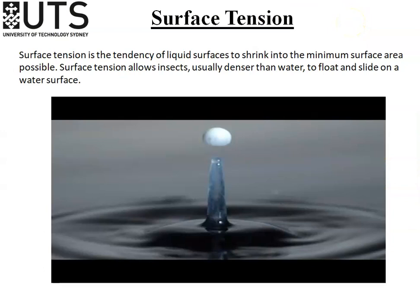Next is a very important concept: surface tension. Surface tension is the tendency of liquid surfaces to shrink into the minimum surface area possible. It allows insects, which are usually denser than water, to float and slide on the water surface — that is why insects can walk on water but humans cannot. Throughout this subject we will need the concept of surface tension, so let's have a look at a video to get a clear understanding.